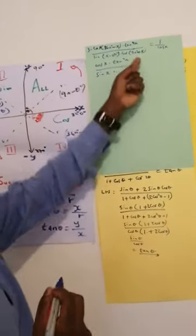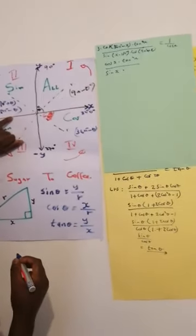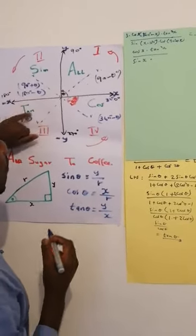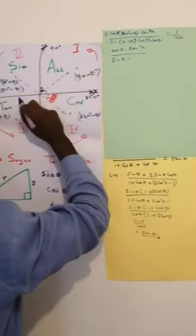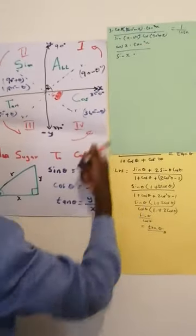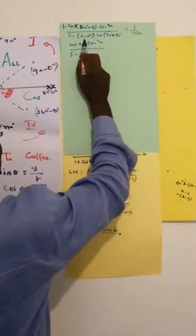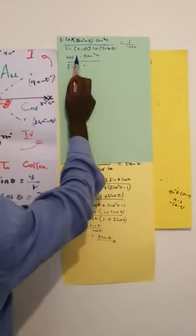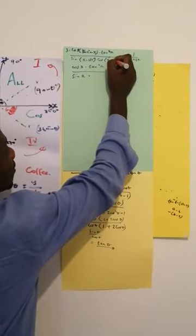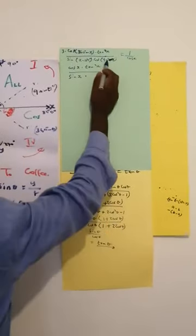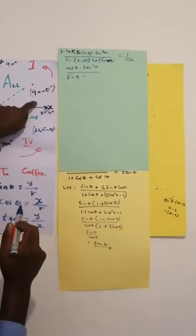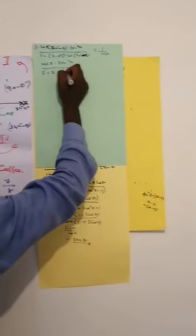Cos(90° + x) — cos here is negative. So cos(90° + x) is going to be negative. There is a negative sign here, giving cos(90° − x) after applying the negative. What is cos(90° − x)? It's sin x. So it's going to be sin x.